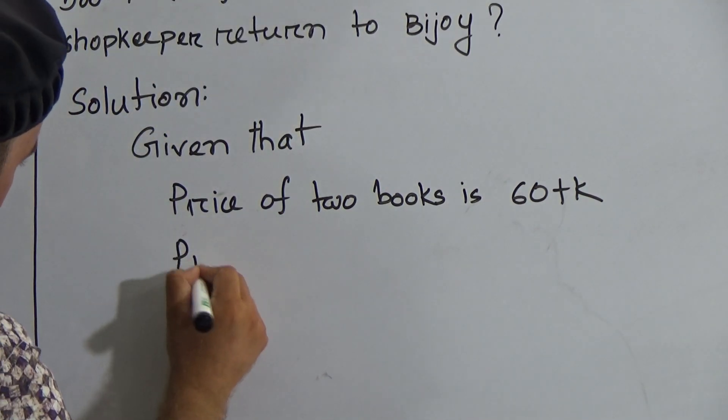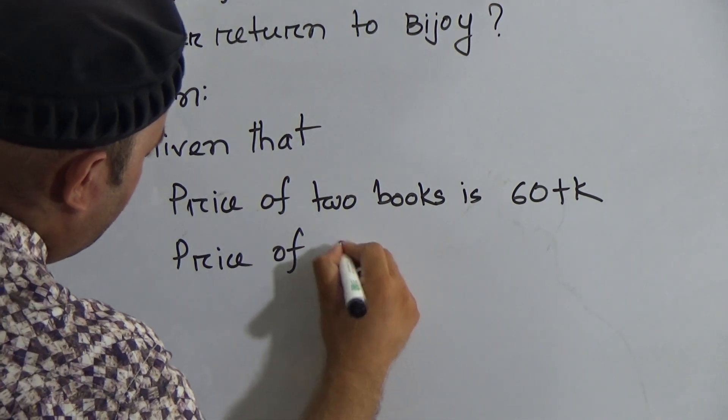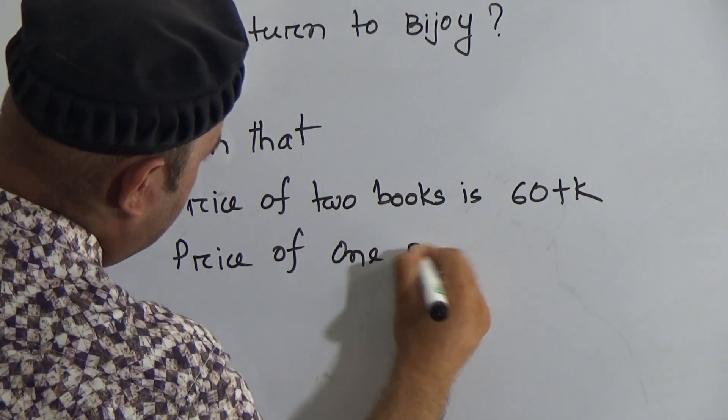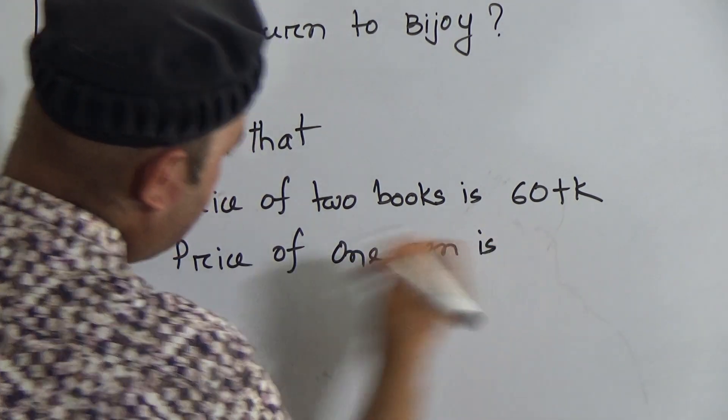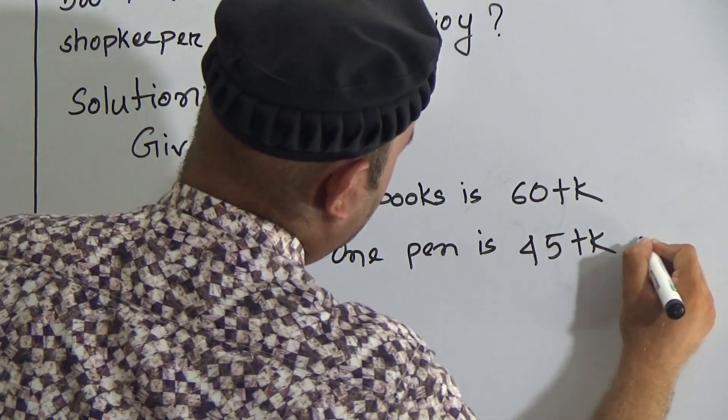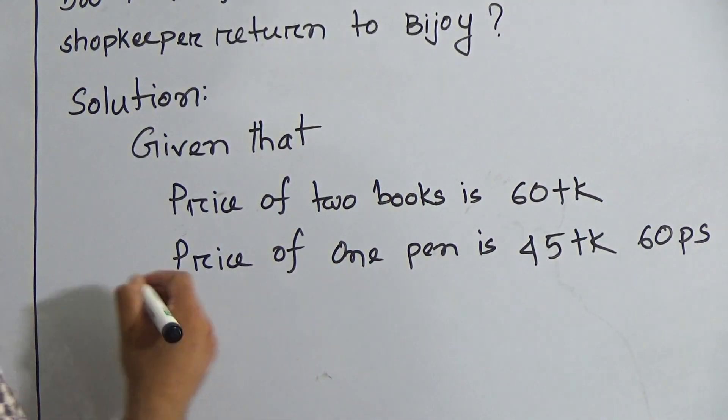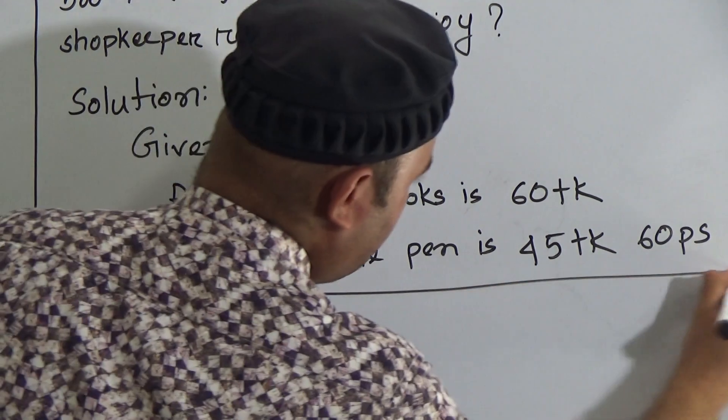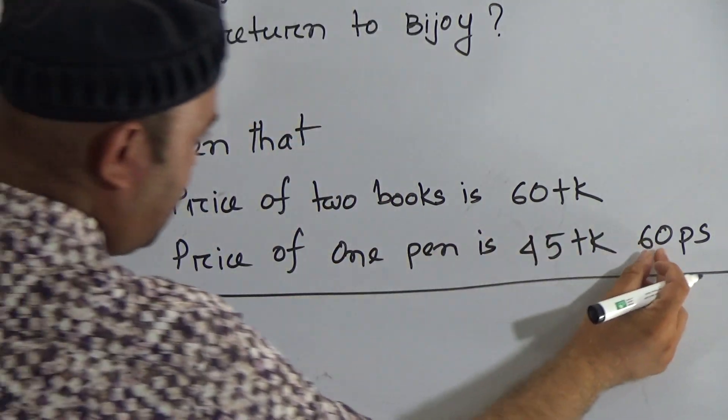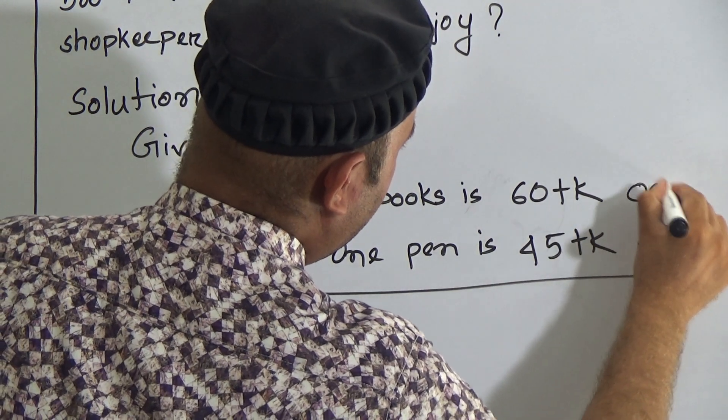is 60 taka. Price of one pen is 45 taka 60 poises. Now here is 60 poises and here is no more poises so we can also write here zero poises.